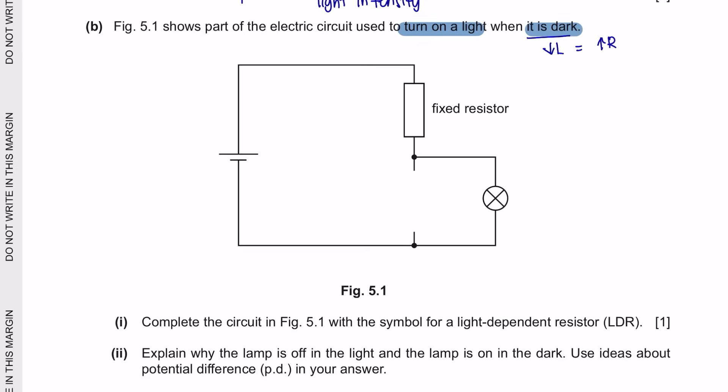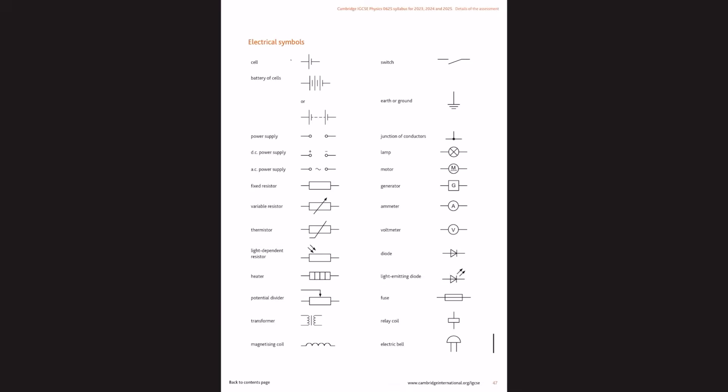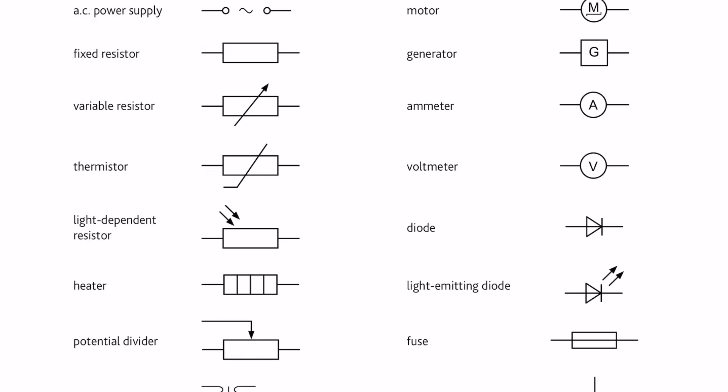Question part 1. Complete the circuit in figure 5.1 with the symbol for a light-dependent resistor. Make sure you memorize all the electrical symbols in your course syllabus. And as for light-dependent resistor, this is what it looks like.